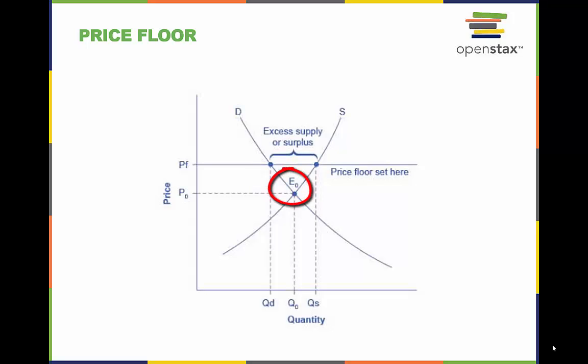However, a price floor set at PF holds the price above EO and prevents it from falling. The result of the price floor is that the quantity supplied QS exceeds the quantity demanded QD. There is excess supply, also called a surplus.